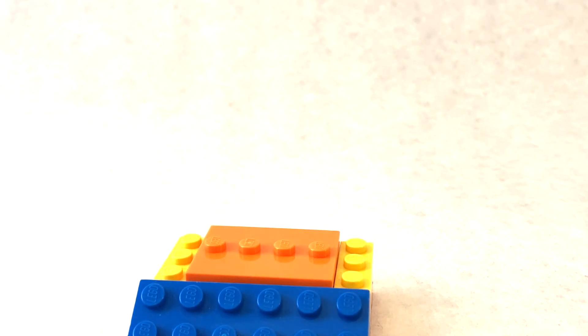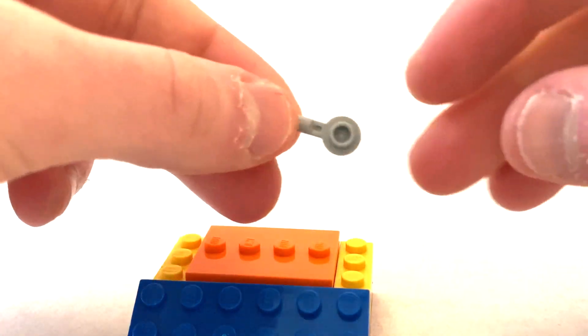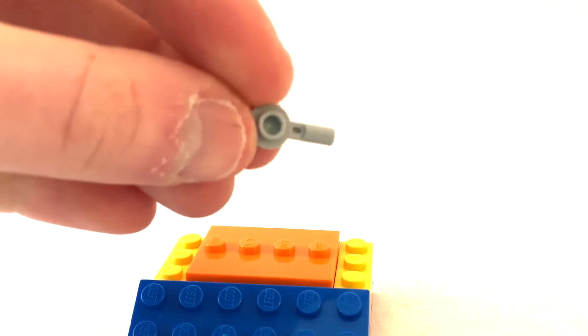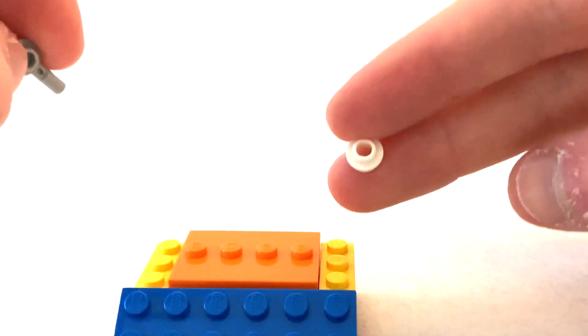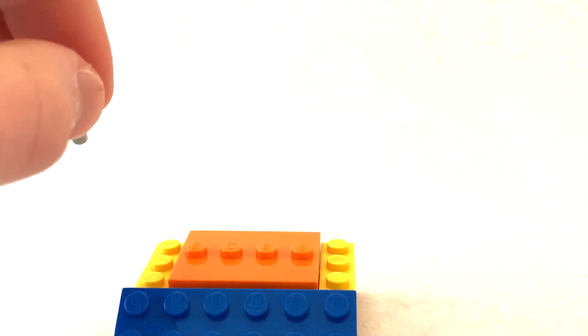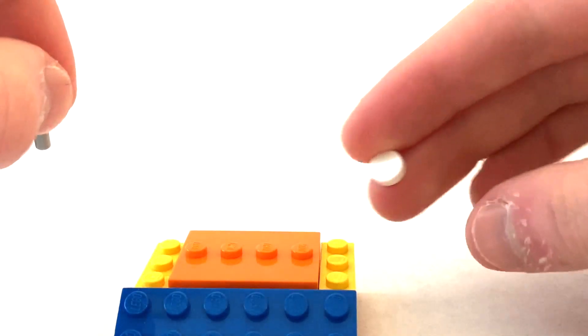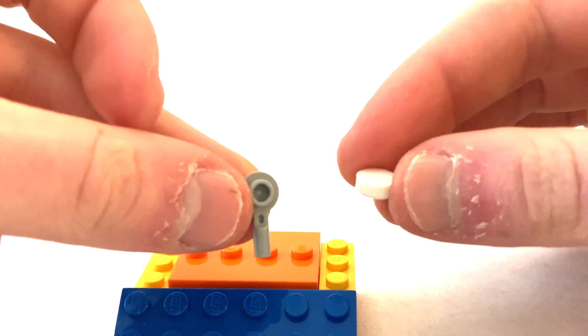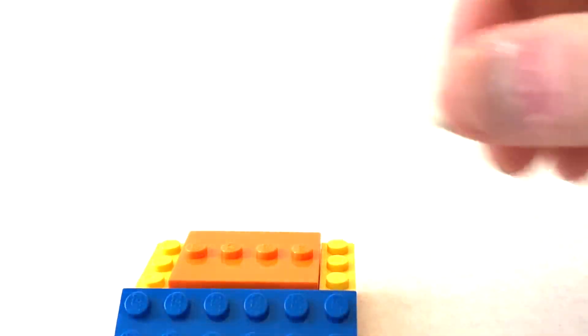So the three pieces you'll need are one of the studs with a pin sticking out, a one by one stud with a hole in it, and then a one by one circular tile. So what you do is you place the tile on the stud like this.